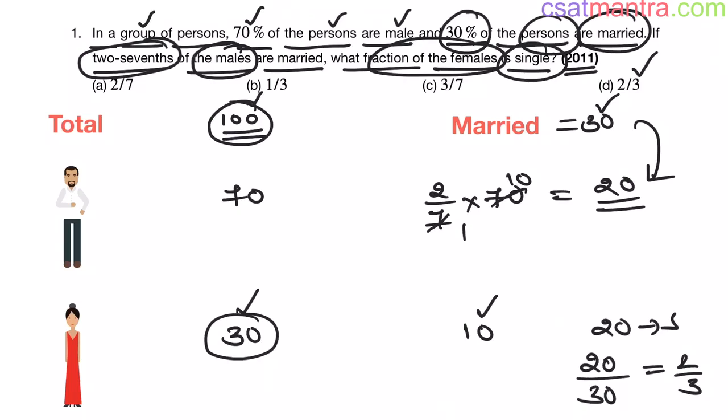So, two-thirds fraction of females is single. Very simple problem. Assume the total number of persons as 100. Out of them, 70% of the persons are male, that is equal to 70. Now, 30 will be females. Now, 30% of the persons are married, so that is equal to 30.